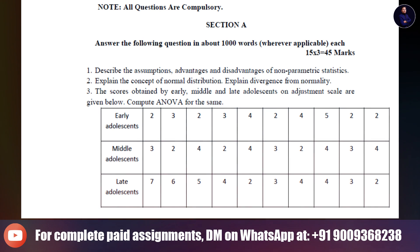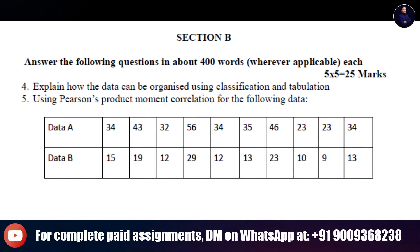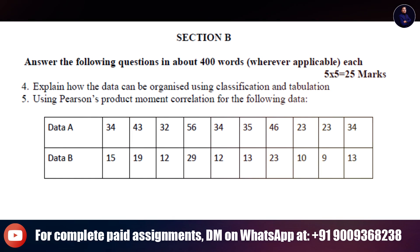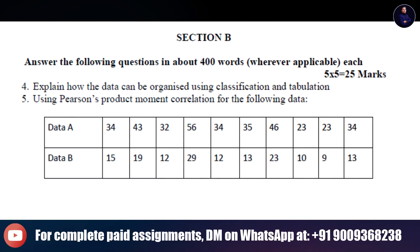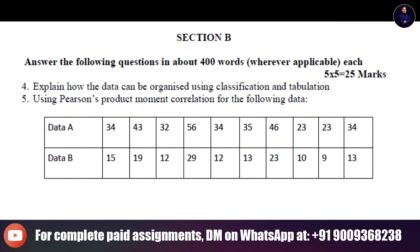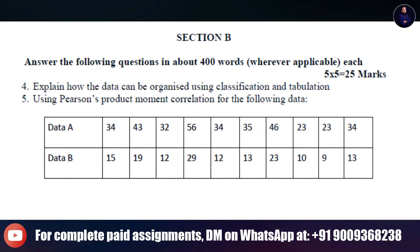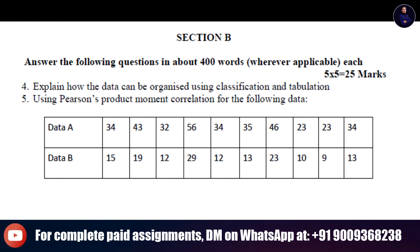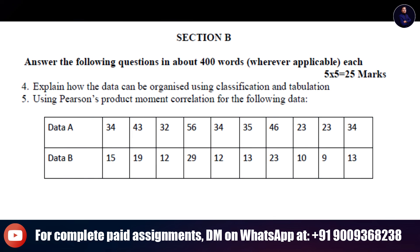Section B. Answer the following questions in about 400 words, wherever applicable, each. 5 times 5 is equal to 25 marks. 4. Explain how the data can be organized using classification and tabulation. 5. Using Pearson's product moment correlation for the following data.